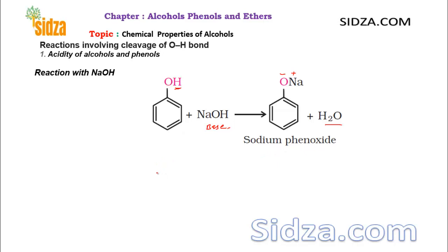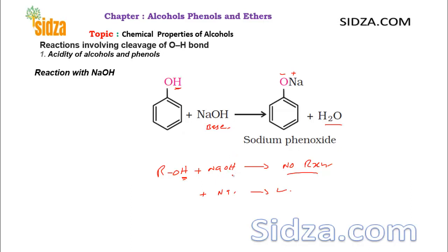If we try the same reaction with alcohols — reacting any alcohol with sodium hydroxide — no reaction occurs. Alcohols can react with active metals like sodium, but alcohols cannot react with a base like sodium hydroxide or potassium hydroxide. This confirms that both react with active metals, but alcohols and phenols do not react similarly with alkalis like sodium hydroxide.